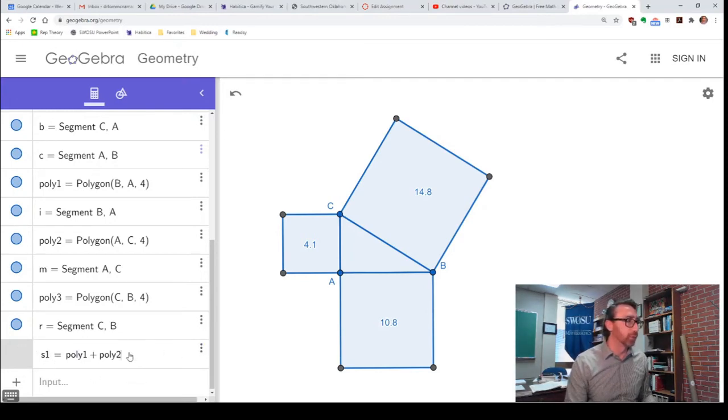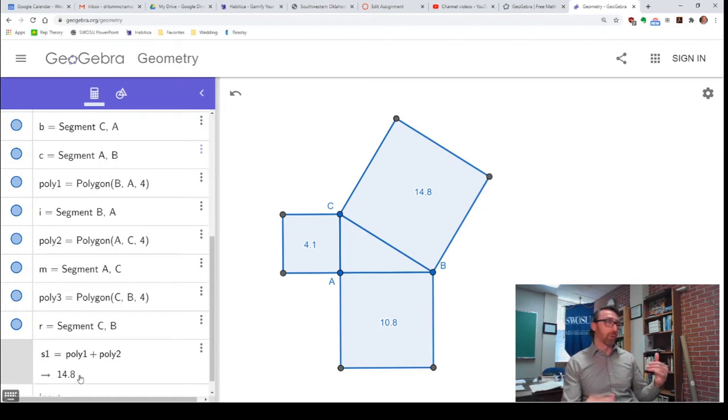So, over here in the algebra window, here's what I'm going to do. I've got a new variable defined. I've got S1 equals poly1 plus poly2. Poly1 is the polygon on side AB, which is right down here. Poly2 is the polygon on side AC, which is right here. And remember, the values of those two variables are the areas. So, what I'm doing here in the variable S1, I am taking the total of the areas.